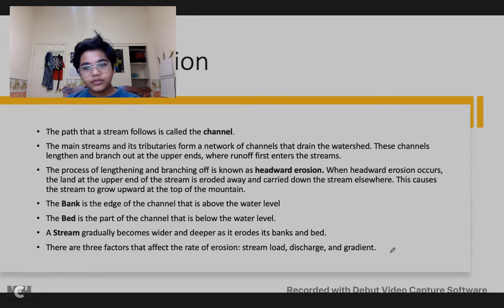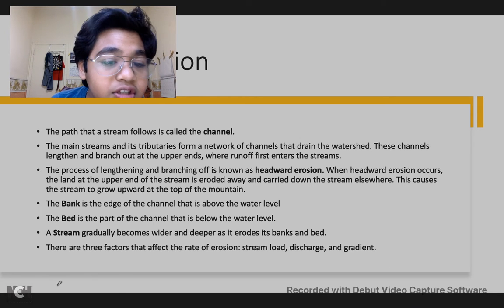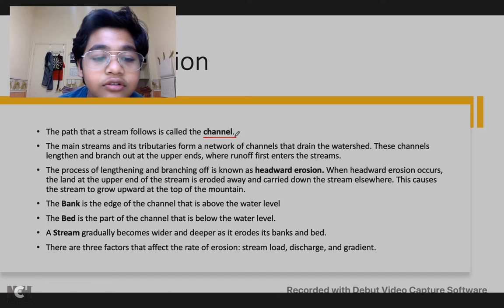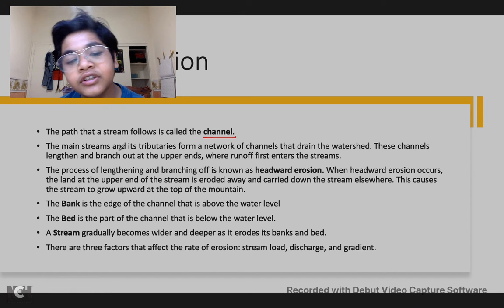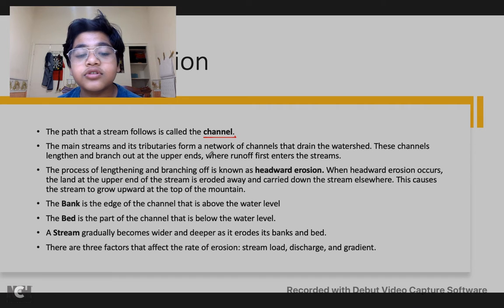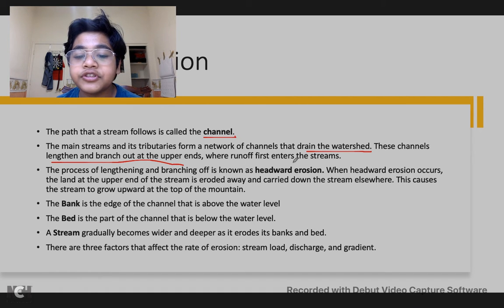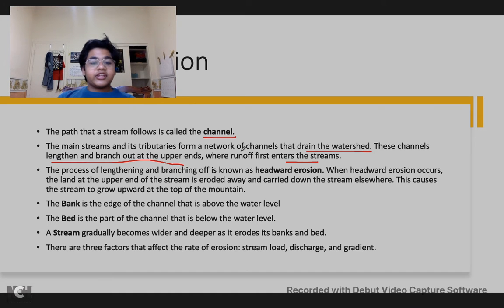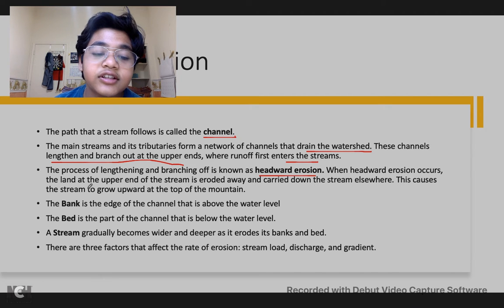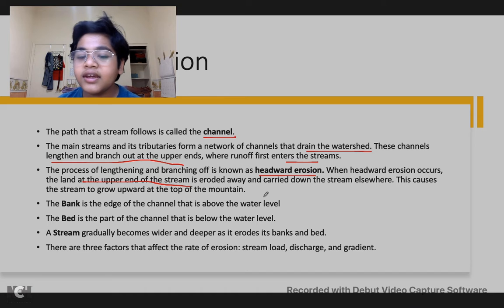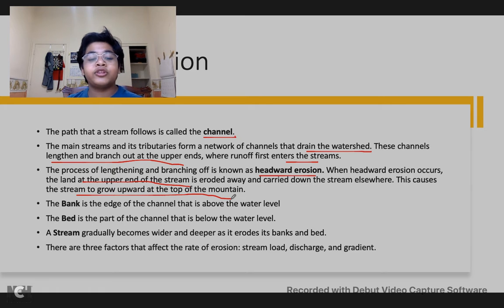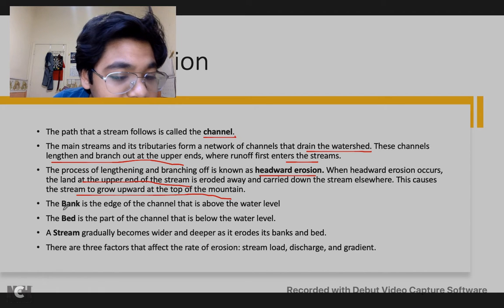Stream erosion: the path a stream follows is called the channel. The main streams and distributaries form a network of channels that drain the watershed, lengthening and branching out at the upper ends where runoff first enters the streams. The process of lengthening and branching is known as headward erosion. When headward erosion occurs, the land at the upper end of the stream is eroded away and carried downstream, causing the stream to extend upward toward the top of the mountain.